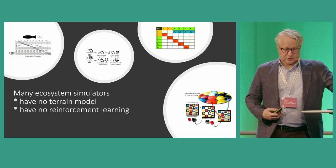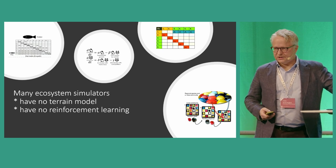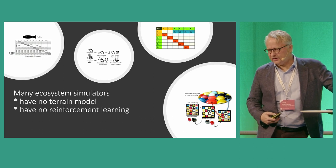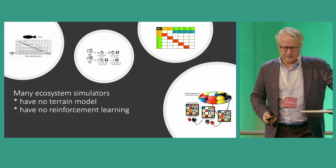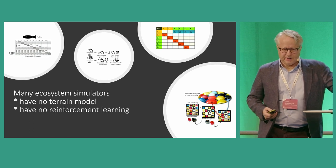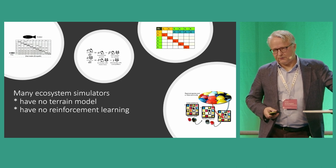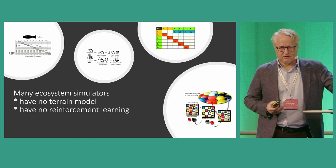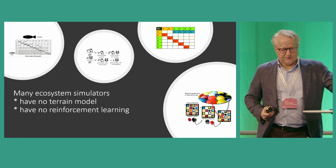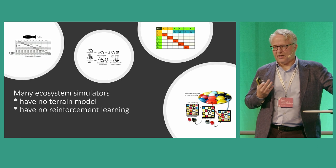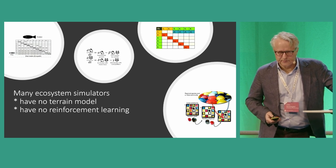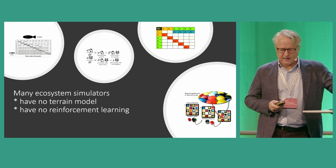For example, many — not to say almost all — don't have any terrain model. And of course, the terrain plays a huge role when it comes to ecosystem development: what kind of vegetation, what kind of mountains and land cover. Also, many of them have very limited behavioral models for the animals. They are often pre-programmed or reflex agents that are the result of genetic algorithms, for example. There are no, or at least very few, ecosystem models where the animals are powered by reinforcement learning, which is an AI technique that has proven to be very powerful.